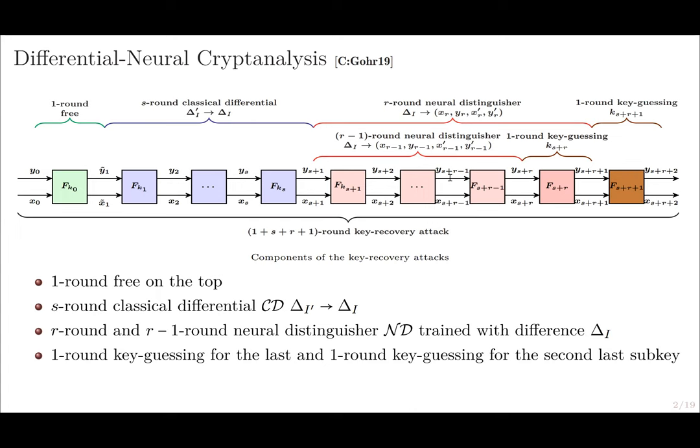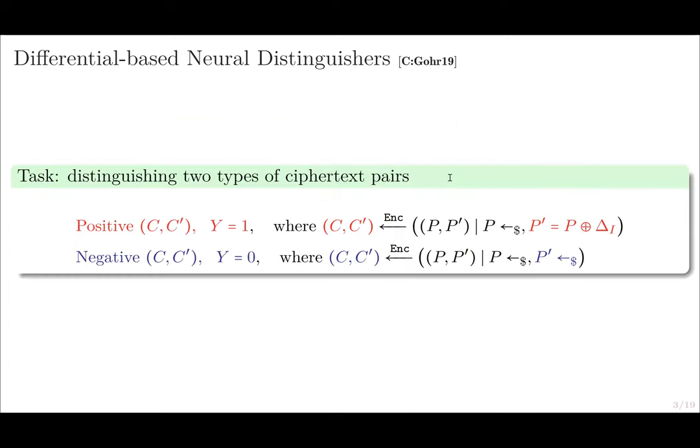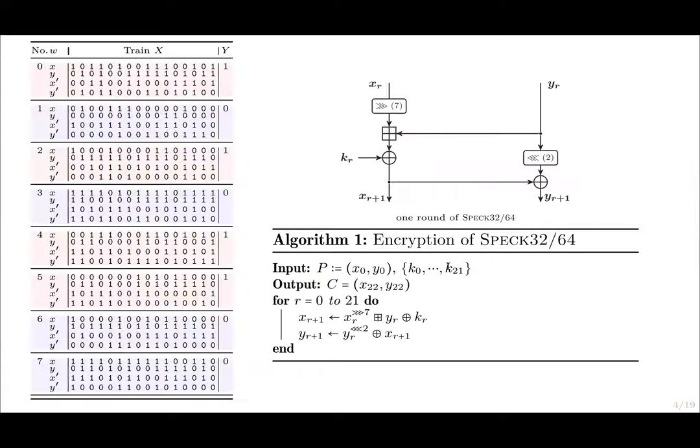The neural distinguisher is built by training neural networks to distinguish two types of ciphertext pairs: pairs whose corresponding plaintexts have a specific difference, and pairs whose plaintexts are randomly selected. The targeted cipher is the smallest version of the lightweight block cipher SPECK 32/64, which is an ARX cipher.